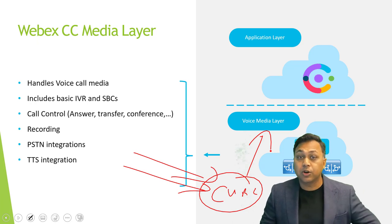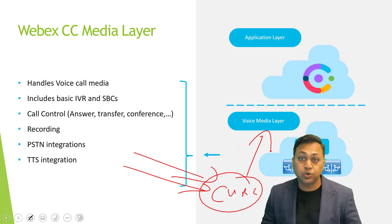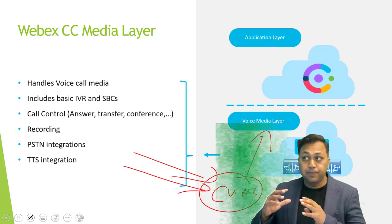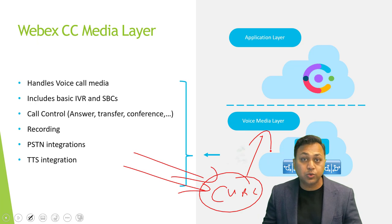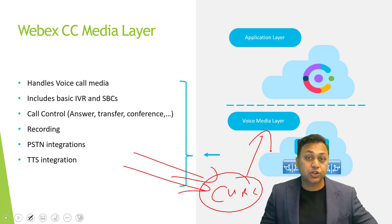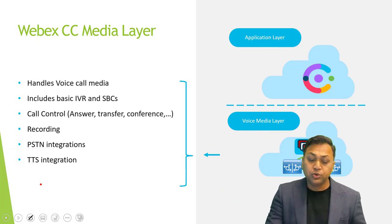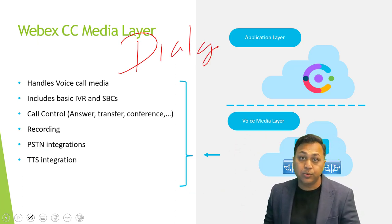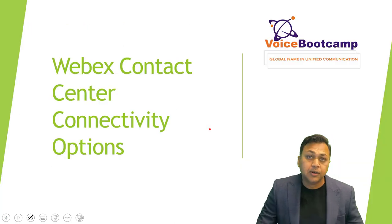The call control voice media layer also deals with call control such as answering, transferring, and conferencing. It is also where recording tasks are handled, along with PSTN integration with either Cisco Cloud PSTN or Cloud Connected PSTN — external partners that Cisco has a relationship with. It also provides TTS integration. For example, if you want to use Google Dialogflow or any supported external application, that device will communicate with the voice media layer as well.